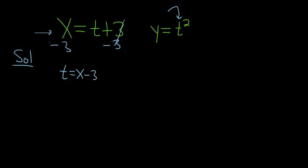Now that we have t, all we do is take it and plug it in here. So that will give us y equals parentheses x minus 3 squared. So that would be the rectangular equation.